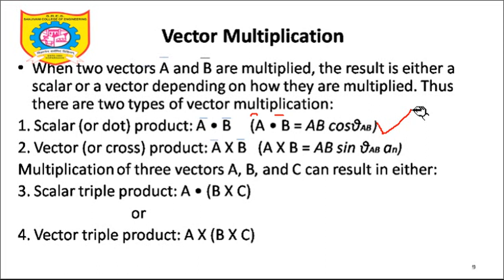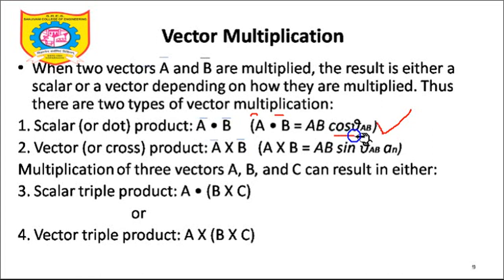Now, vector or cross product. A̅ cross B̅ — to calculate the cross product between two vectors A̅ and B̅, we write: A̅ cross B̅ is equal to AB sin(θ_AB). In the dot product we had cos theta, whereas in the vector product or cross product we have sin theta.